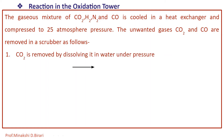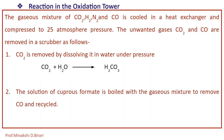The gaseous mixture of CO2, H2, N2 and unreacted CO coming out of the oxidation tower is cooled in a heat exchanger and compressed to 25 atmospheric pressure. The unwanted gases CO2 and CO are removed in a scrubber: CO2 is dissolved in water under pressure to form H2CO3 (carbonic acid), and CO is removed by boiling the mixture with a solution of cuprous formate.